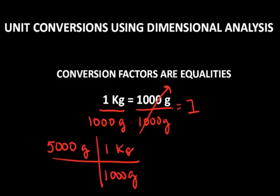Because it's just like multiplying a number by 1, so it's still valid. I'm not changing the value of the number. And so the gram unit will cancel, and I end up with 5,000 divided by 1,000 equals 5 kilograms.